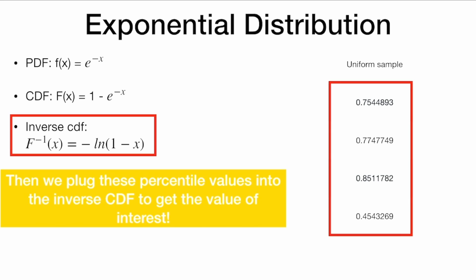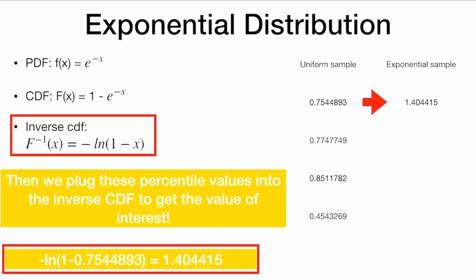Then, using our method, we simply want to translate the percentiles to actual values of the exponential variable. And we do this by plugging these percentile values into the inverse CDF. Okay, so I take the percentile, and I plug it into the inverse CDF, and we see that we get 1.404415.